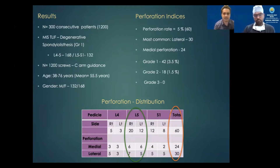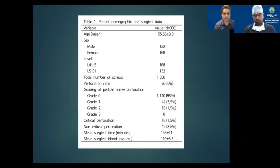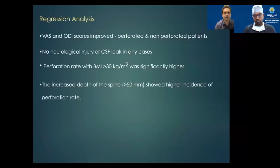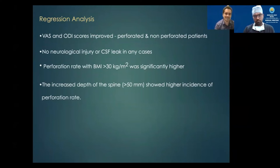As seen in the table, L5 pedicle screws were the most perforated among all 60 perforated screws, and perforation was mainly lateral. The demographic data shows Grade 1 and Grade 2 perforations only. VAS and ODI scores in both perforated and non-perforated patient groups showed significant improvement. There was no neurological injury or CSF leak in any case. Perforation rate with BMI greater than 30 was significantly higher than in patients with BMI less than 30. Increased depth of spine greater than 50 mm also showed a higher incidence of perforation.